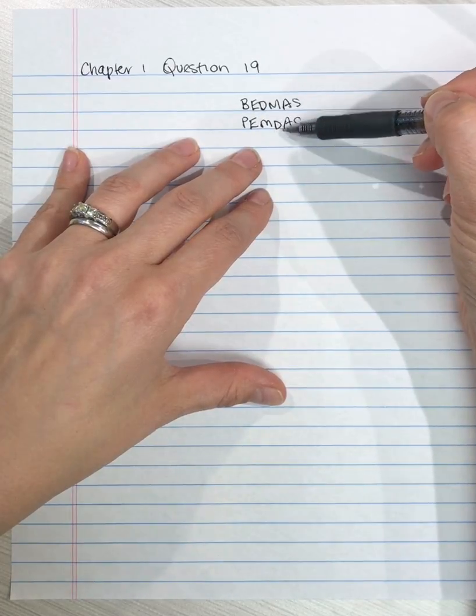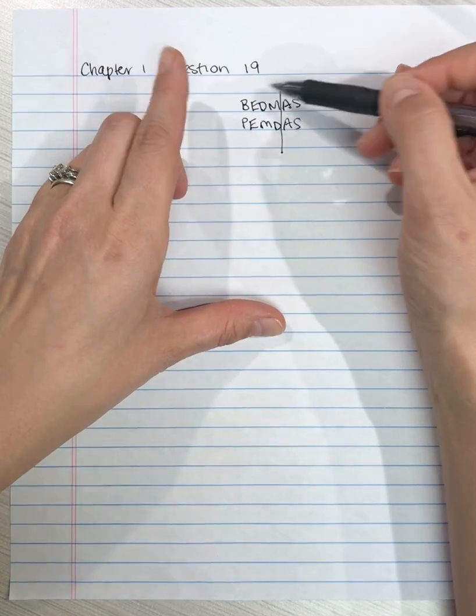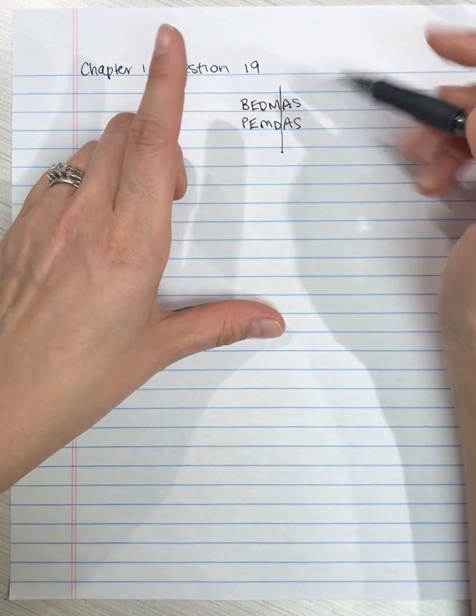Division and multiplication happen as they come. Then between a division, multiplication, and addition, and subtraction.